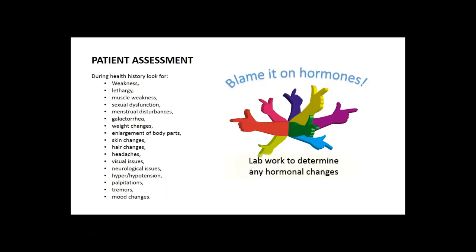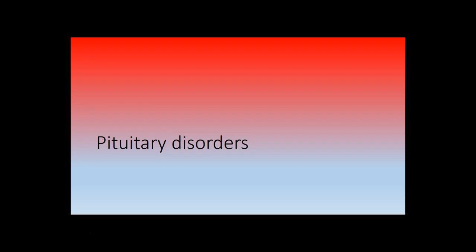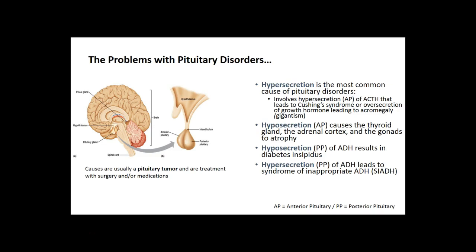Patient assessment can be very difficult when we talk about the endocrine system, simply because a lot of the symptoms can be the result of other disorders. A lot of times lab work is going to be needed to determine any hormonal changes. Talking about pituitary disorders, it's typically going to be either an over-secretion or under-secretion from the anterior or posterior pituitary. Remember: the posterior pituitary stores ADH, and if you see questions on other hormones for our exam, it's going to be coming from the anterior pituitary.